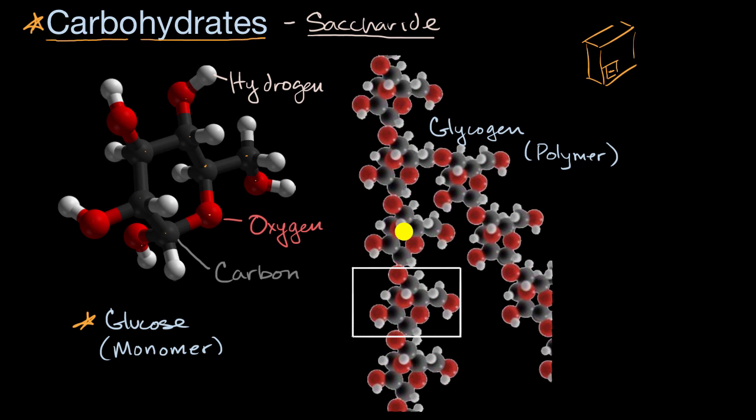And as you can see, it's just a repeating sequence of glucose molecules. And so something like this, we would call glucose a monosaccharide. It's one simple sugar right over here.